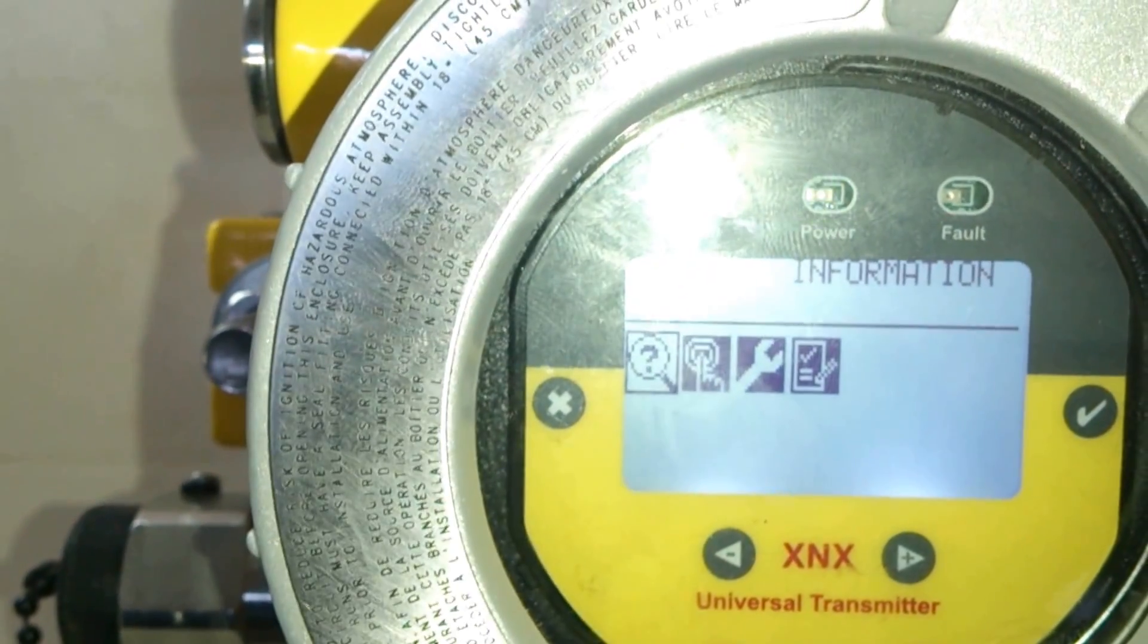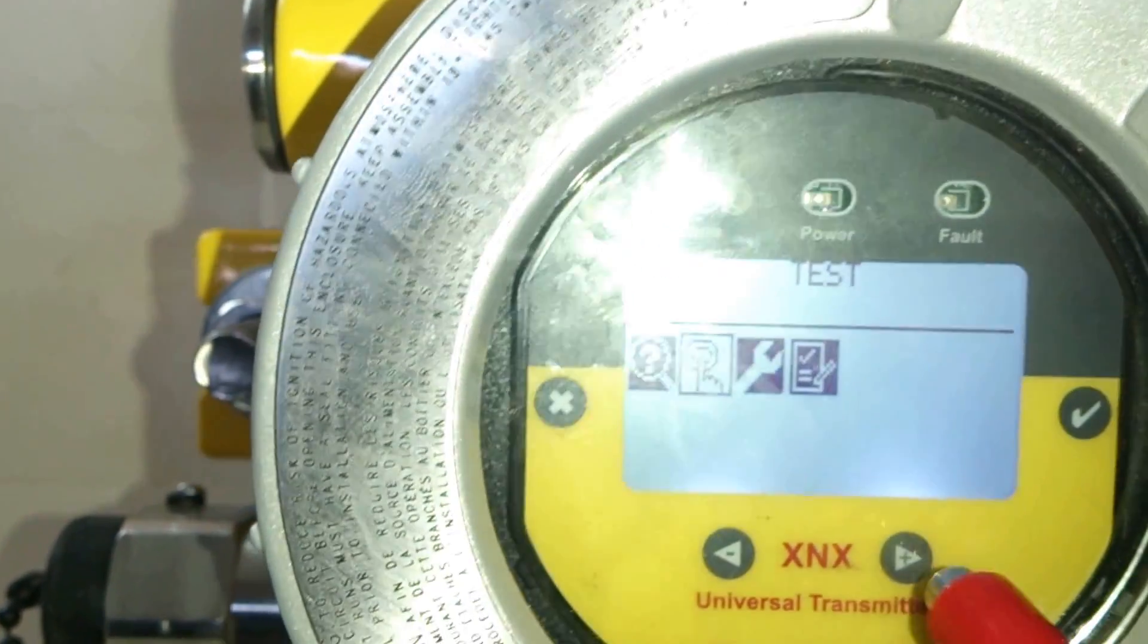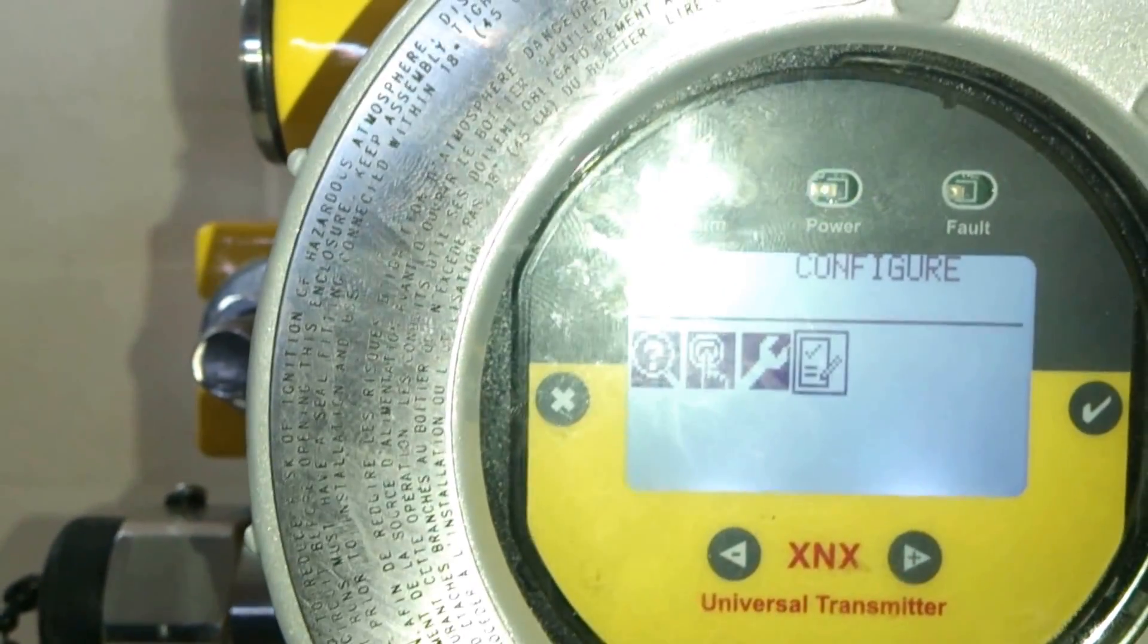In the main menu we have four icons. First is information, second is test, third is calibrate, and fourth is configure. We select the configure first.